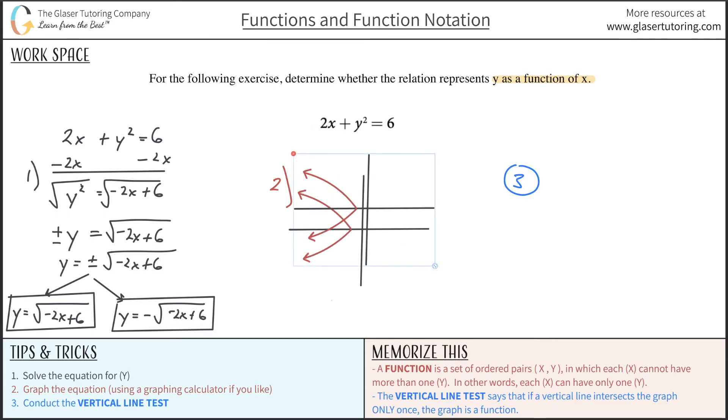So we also note that the vertical line test says that if a vertical line intersects the graph only once, then the graph is a function.